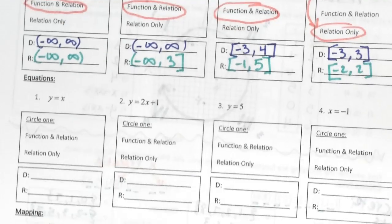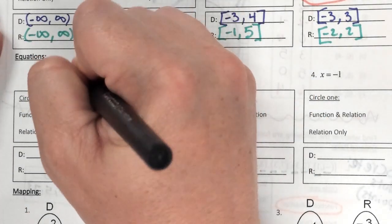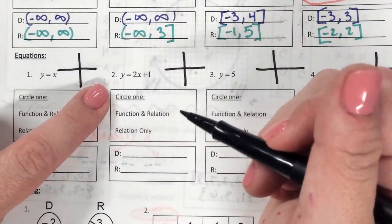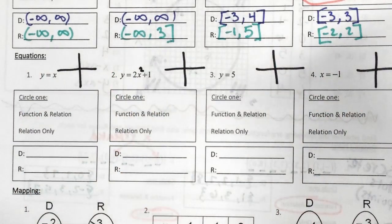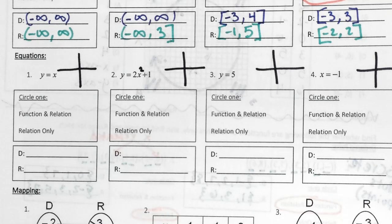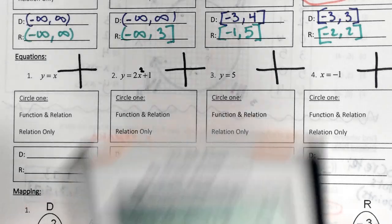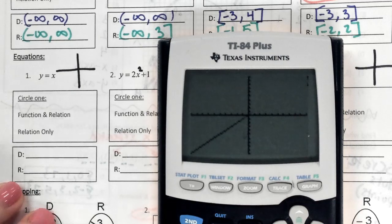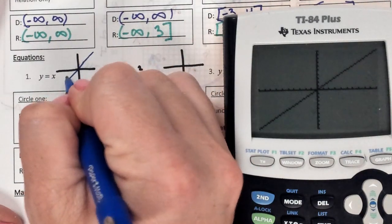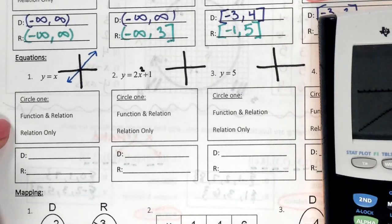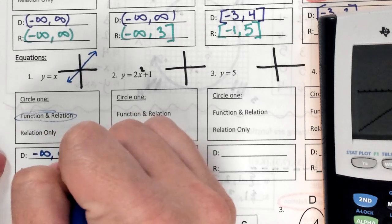Now let's look at the equations — I like to sketch them. We're also editing number 2's equation from 2x plus 1 to 2x squared plus 1, so write that down. If I graph y equals x in the calculator it's the perfect diagonal — the linear parent function, straight through the origin. It looks similar to example 3. Is it a function? Yes. Domain and range are both negative infinity to positive infinity because it goes up, down, left, and right forever.